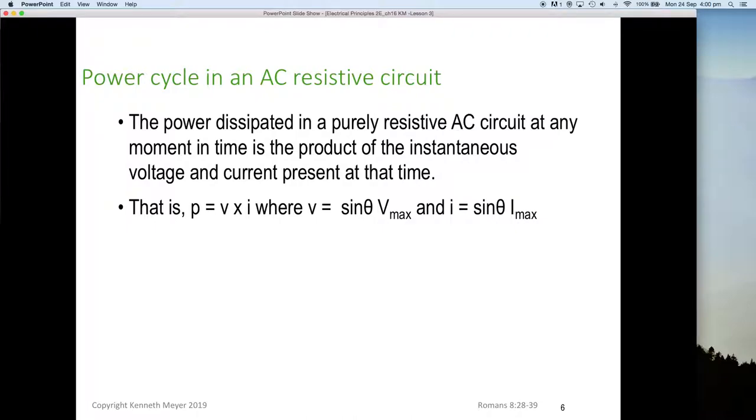The power in an AC resistive circuit is reasonably straightforward. The power dissipated in a purely resistive AC circuit at any moment in time is the product of the instantaneous voltages and the current present at that time. That is, P equals V multiplied by I, where V is sine of theta V_max and I is sine of theta I_max.